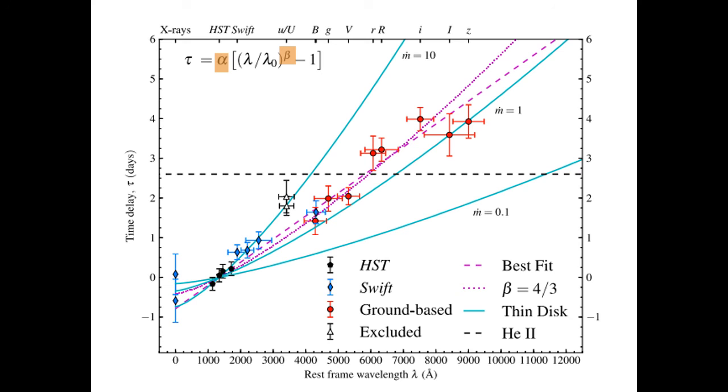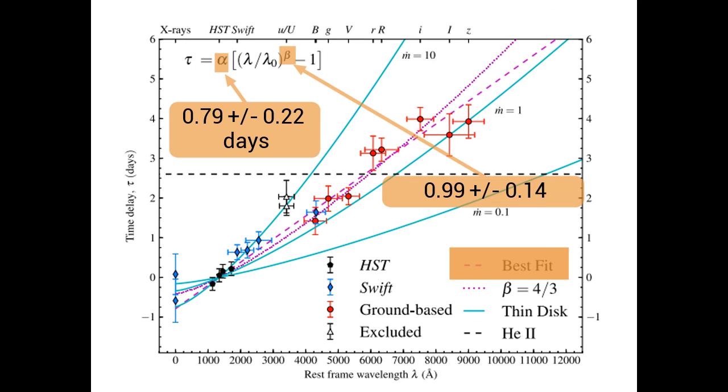Our best fit parameters are alpha equals 0.79 days and beta equals 0.99. Although the flatter value of beta is statistically preferred, the result is driven by the downturn at the I and Z band lags, and we find that beta is consistent with four-thirds if these lags are excluded from the fit.